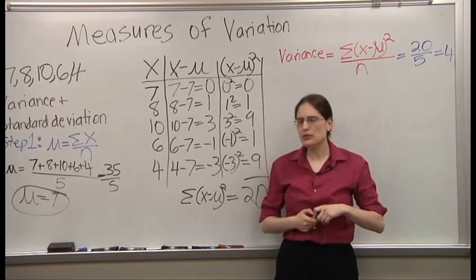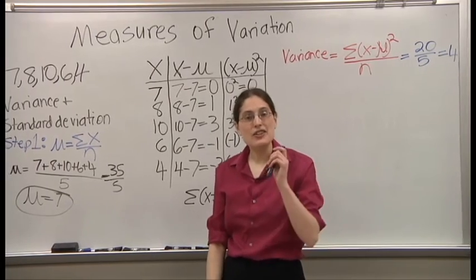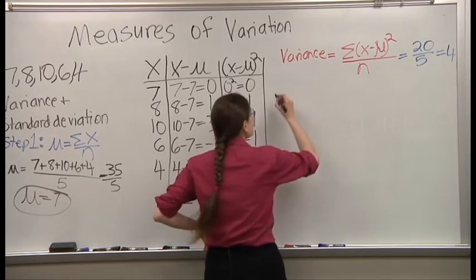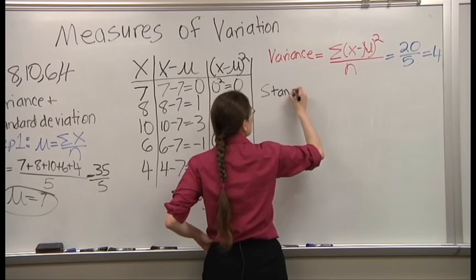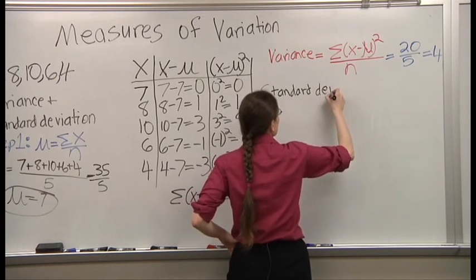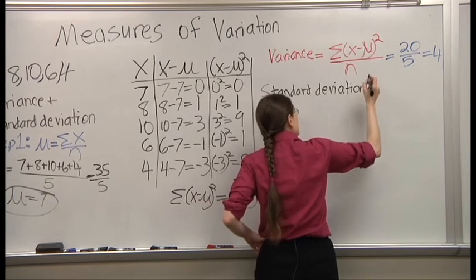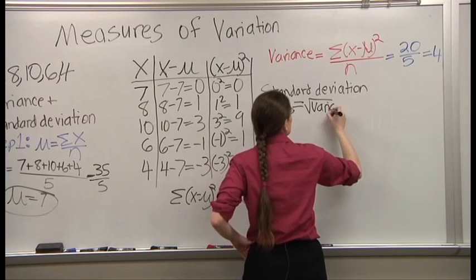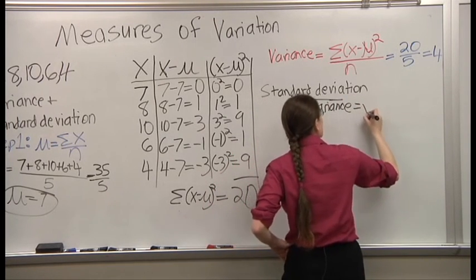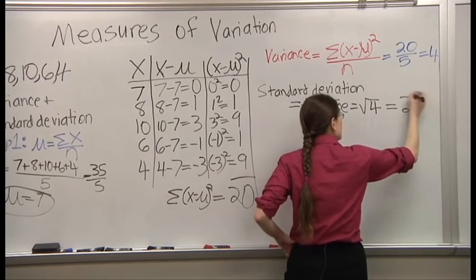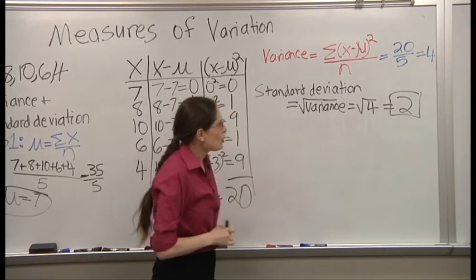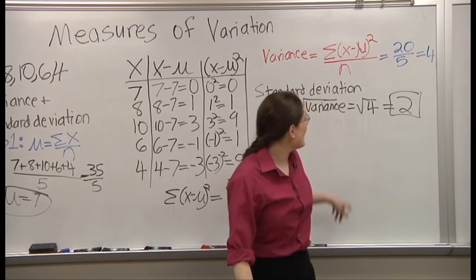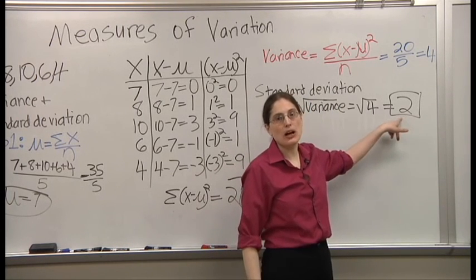Okay. Now, do we have to do it all over again to find the standard deviation? No. You just take the square root. The standard deviation is two. It turns out that the standard deviation, the one after the square root, is a lot more useful.